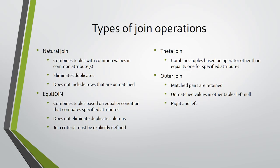There are many types of join operations. The natural join combines relations by selecting rows with common values in common attributes. The previous example is a natural join since it used common values in the common attribute for the department identification code. The common attributes appear only once in the result, thus the natural join eliminates duplicate attributes.